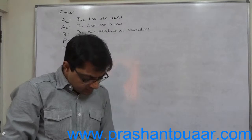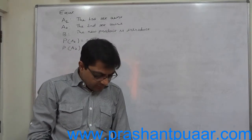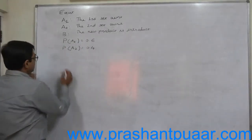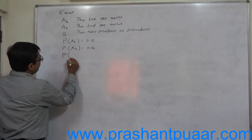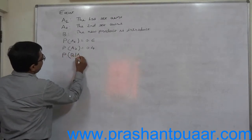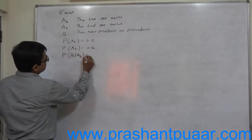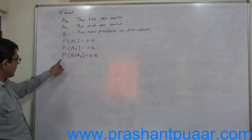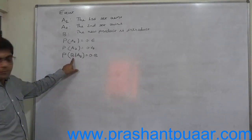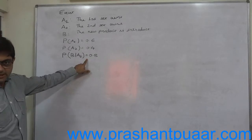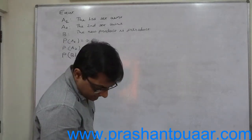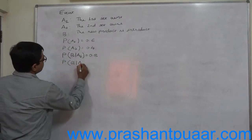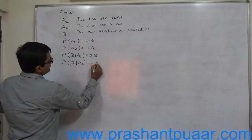The next part says: if the first set wins, the probability of introducing a new product is 0.8. The probability of introducing a new product given the first set wins — that means this is the conditional probability P(B|A1) = 0.8. And similarly, the probability of introducing a new product if the second set wins is given to be 0.3, so P(B|A2) = 0.3.